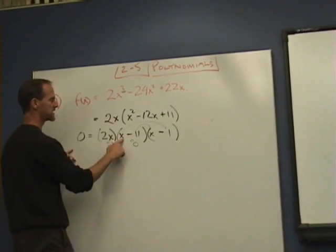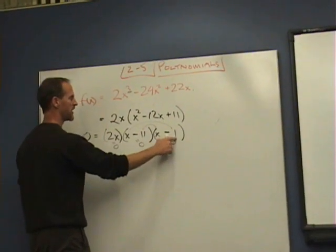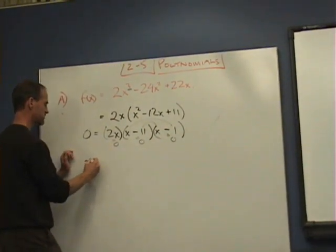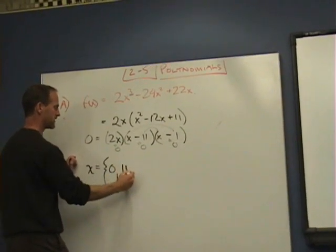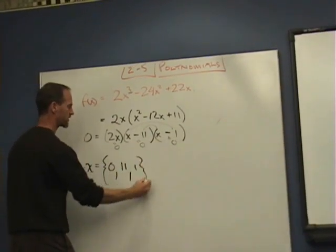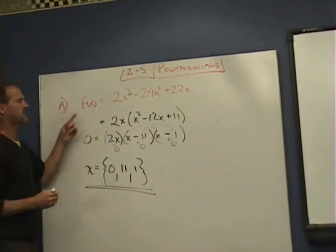When they multiply to give me 0, well that's going to happen when x is 0 - we already know that. This will happen to be 0 when x is positive 11, and here this will be 0 when it's positive 1. So my solutions then are 0, 11, and 1. That's the solution set for the zeros for that polynomial.